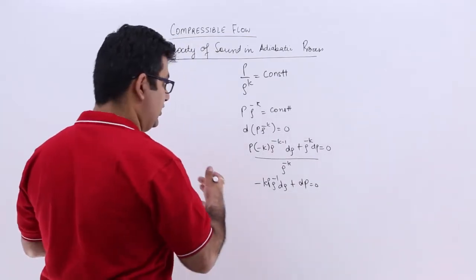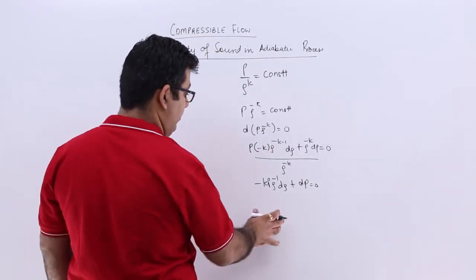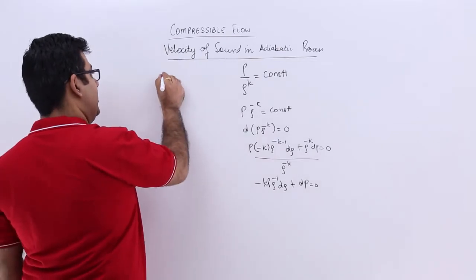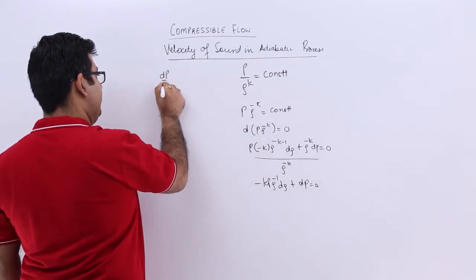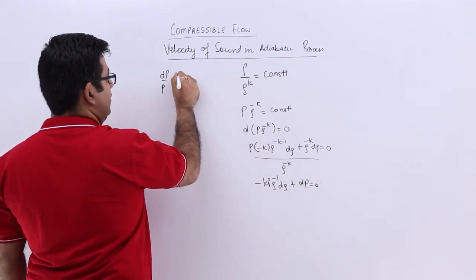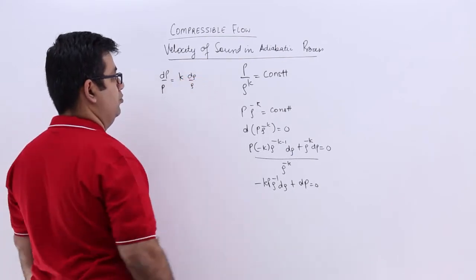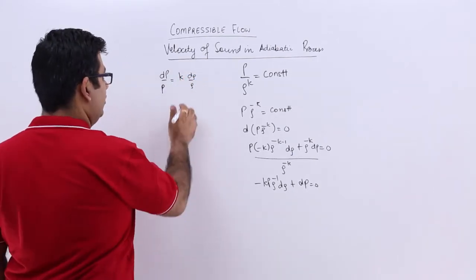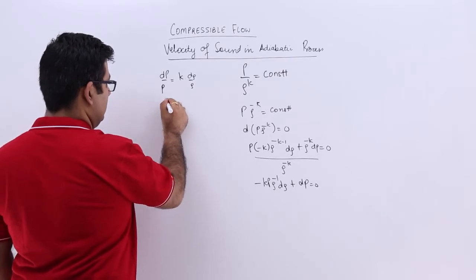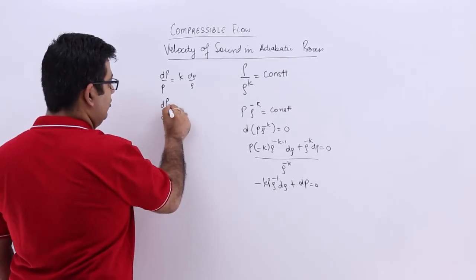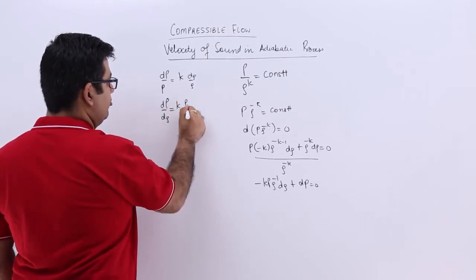It is very simple and almost similar to what we did in the previous video. So from here you will get dp by p equals k times d rho upon rho. So you will have dp by d rho equals k times p upon rho.